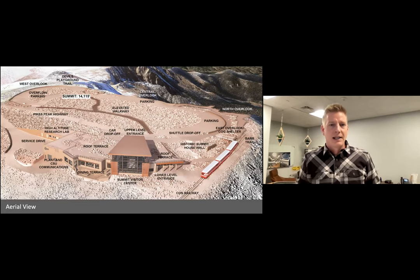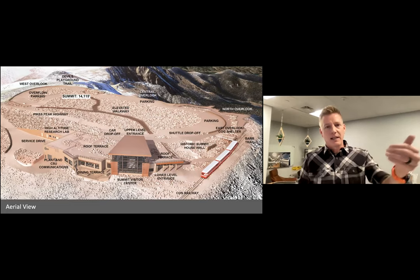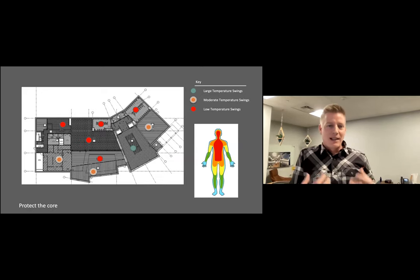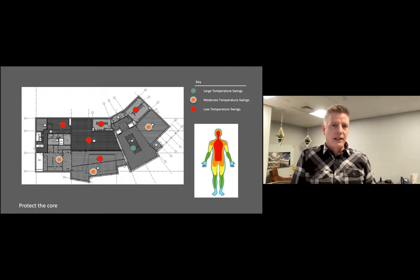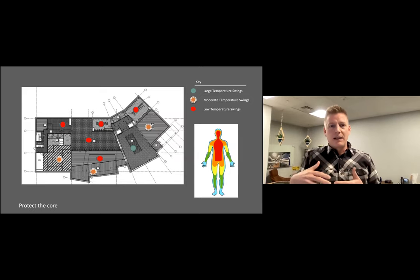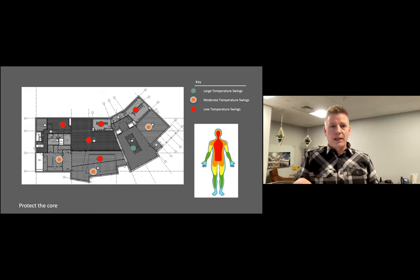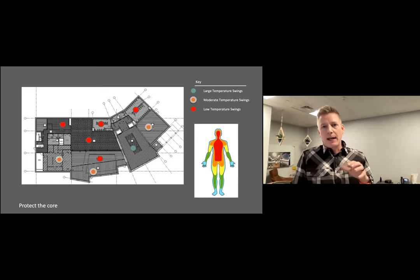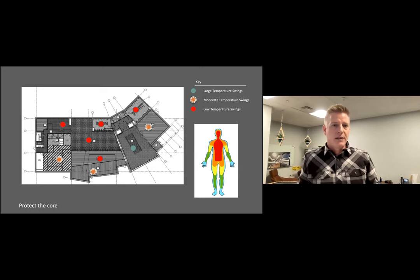They also thought about how warm-blooded organisms — marmots and humans — work, and incorporated that into thermal comfort strategies. Rather than treating the whole building as a 70°F environment, they thought about how people enter wearing coats. If you immediately walk into 70°F, you'll sweat and be uncomfortable. The programming responded to areas that could accommodate large temperature swings — like where 300 people arrive from the Cog Railway with doors open for minutes at a time — versus areas needing low temperature swings for people working there all day.